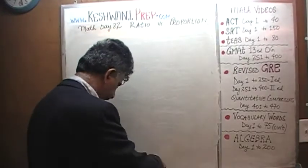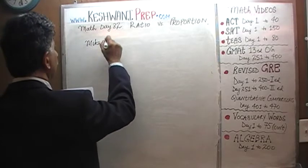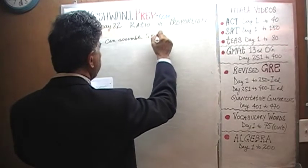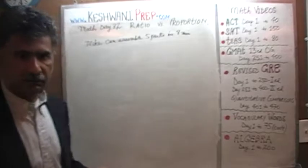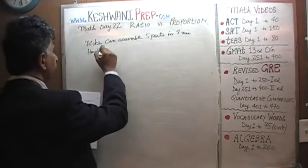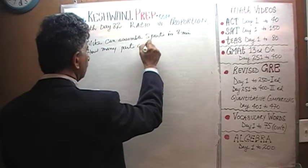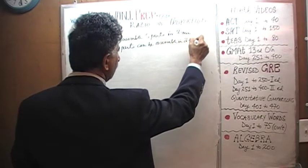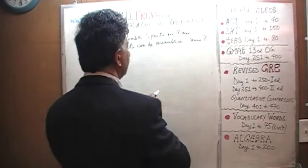Here's the first problem on the blackboard. We are told that Mike can assemble five parts in eight minutes. The question is very straightforward, very simple. How many parts can you assemble in two hours? Let's find that out, shall we? In two hours — that's a two.